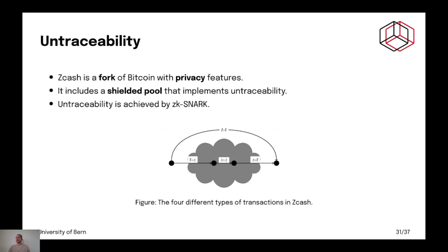Now, let's consider Zcash. Zcash includes a shielded pool that implements untraceability. And untraceability is achieved by ZK-SNARK. So, you are able to spend a coin and prove ownership in a zero-knowledge fashion. And so, that means that you don't have a set of public keys. You don't have an explicit untraceability set.